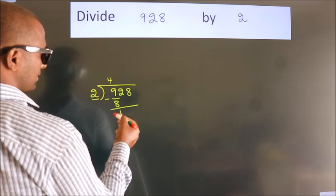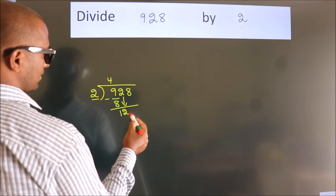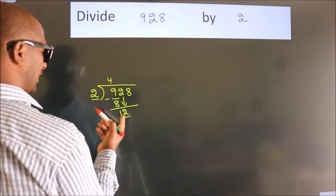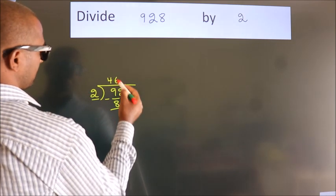After this, bring down the beside number. So, 2 down. So, 12. When do we get 12? In 2 table. 2, 6, 12.